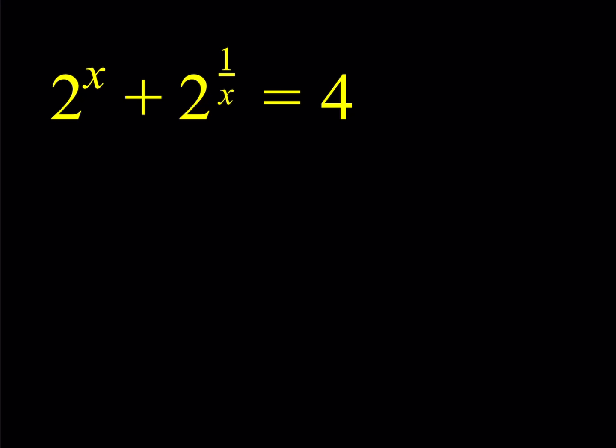First of all, notice that x cannot equal 0, so we can safely say that x is either positive or negative. So one thing to notice about x being negative is that if x is actually less than 0, you're going to get some small terms. For example, suppose x is equal to negative 1. You're going to get like 1 half plus 1 half, which is barely 1.